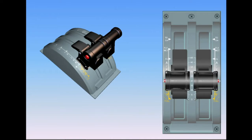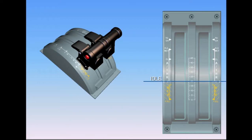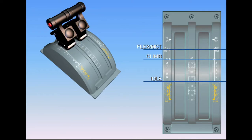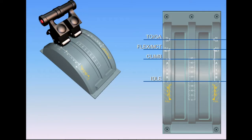When the Autothrottle system is off, the crew controls the thrust in a conventional manner by simply moving the thrust levers to a desired position. For forward thrust, there are four physical detents in the quadrant: Idle, CL for maximum climb thrust, Flex/MCT for flex thrust at takeoff or max continuous thrust, and TOGA for max takeoff or go-around thrust.